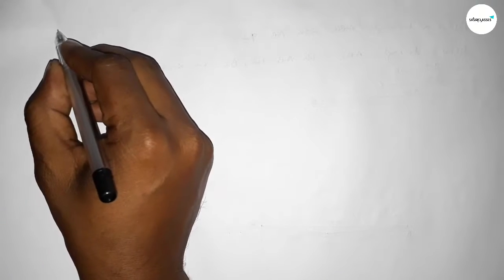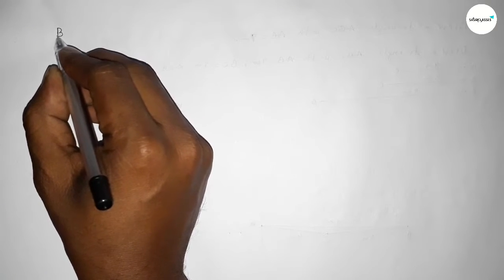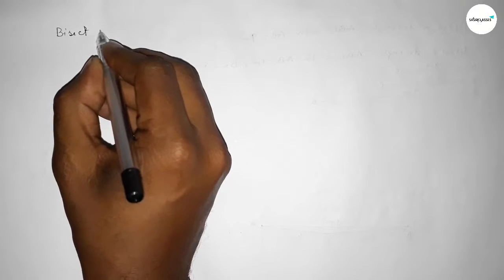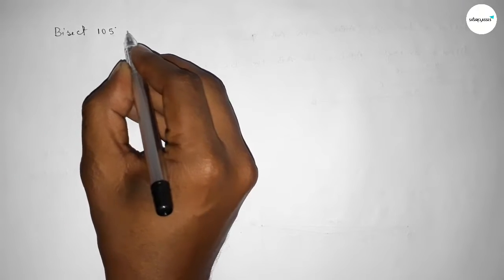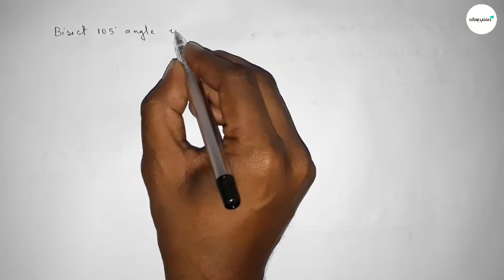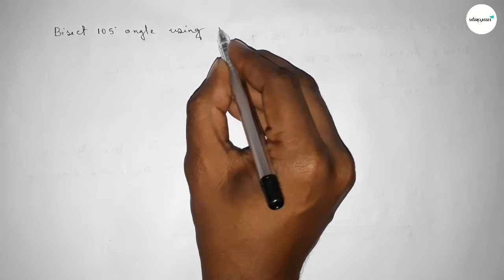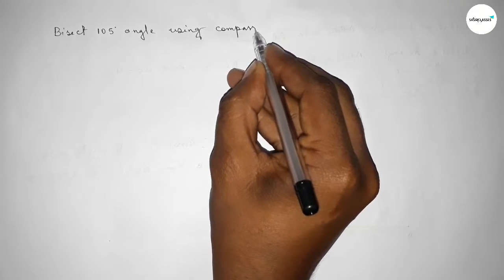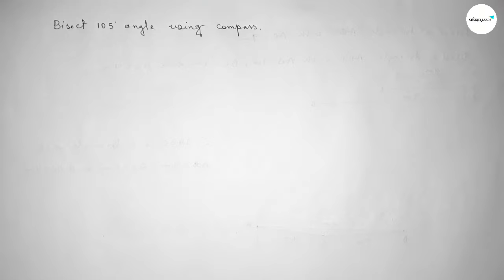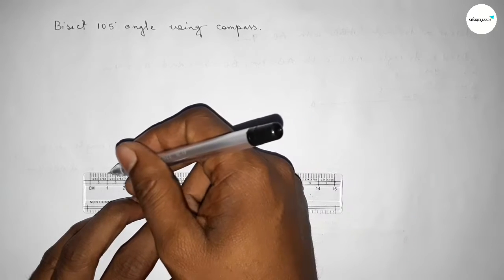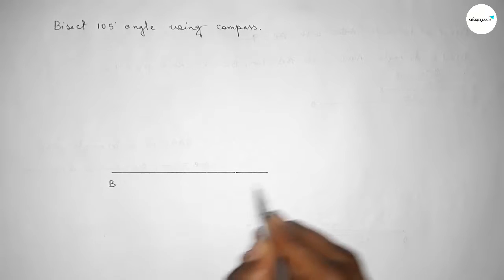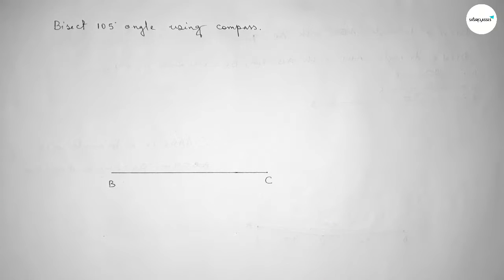Hi everyone, welcome to Essay Share Classes. Today in this video we have to bisect a 105 degree angle using a compass. So let's start the video. First of all, we have to draw a line of any length, then take point B and point C, and draw a 105 degree angle at point B.